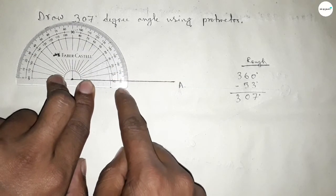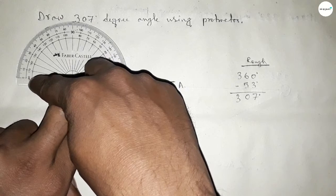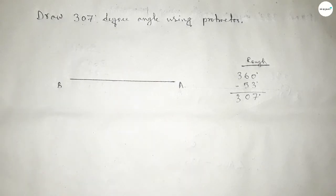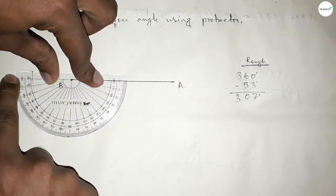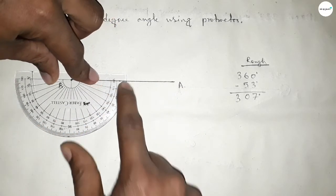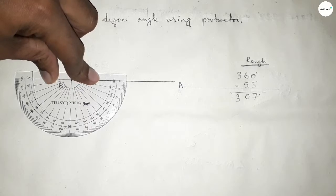So counting the angle, so this is 180 degree plus putting the protractor on the point B by this way and counting total angle. So from total 360 degree, now counting 53 degree.